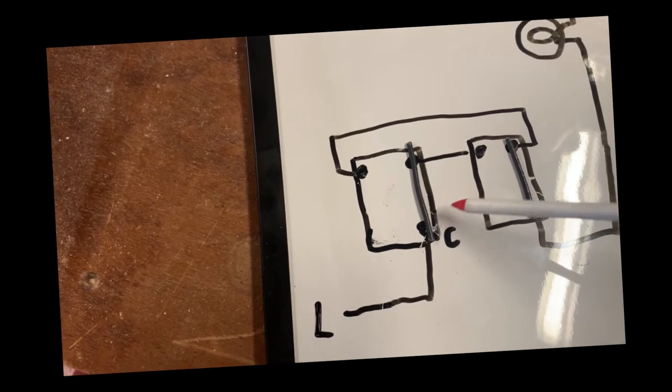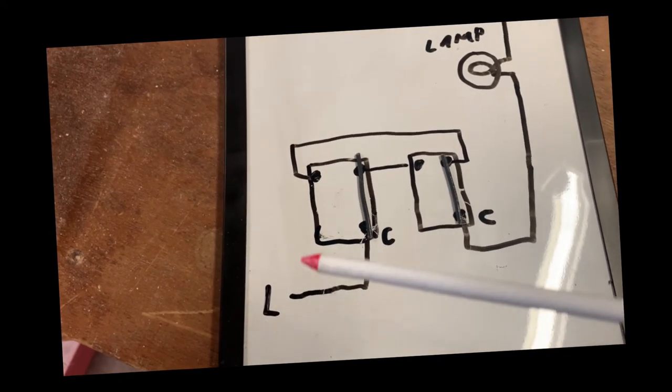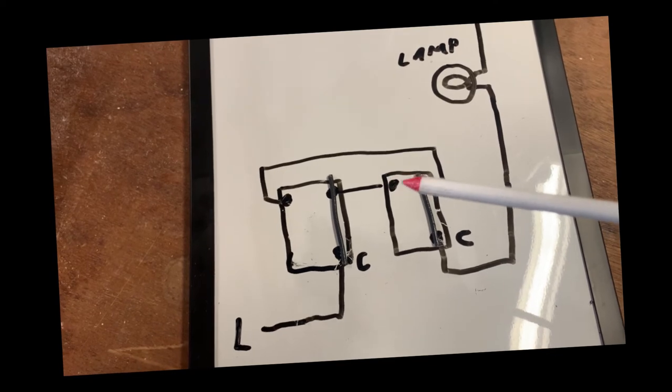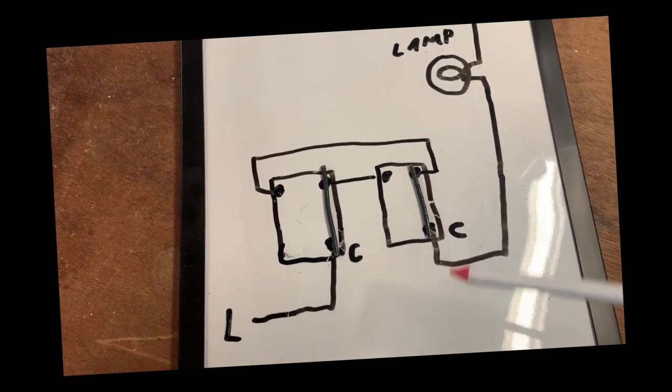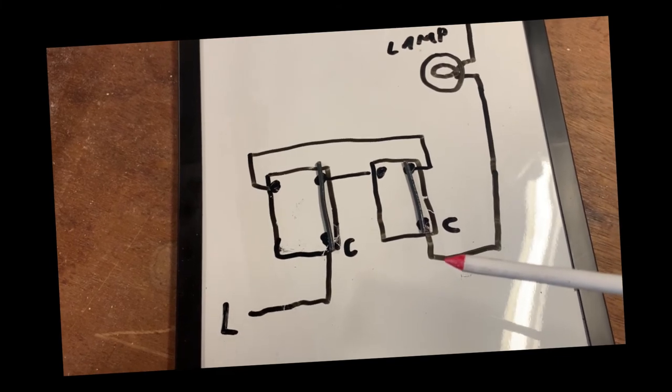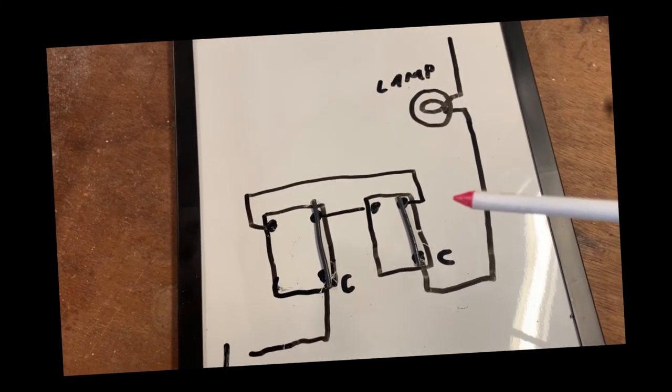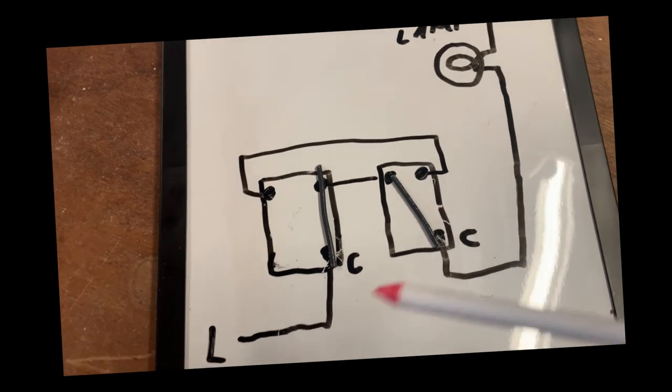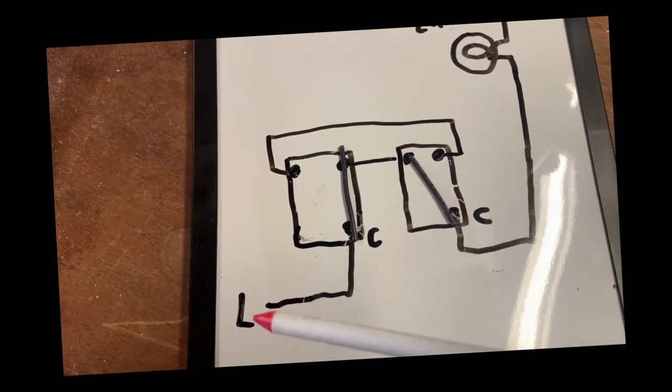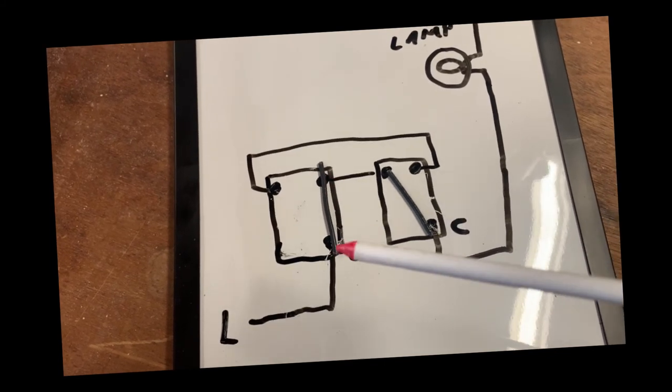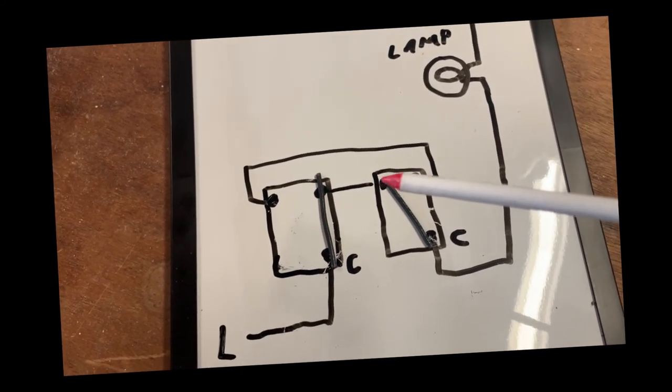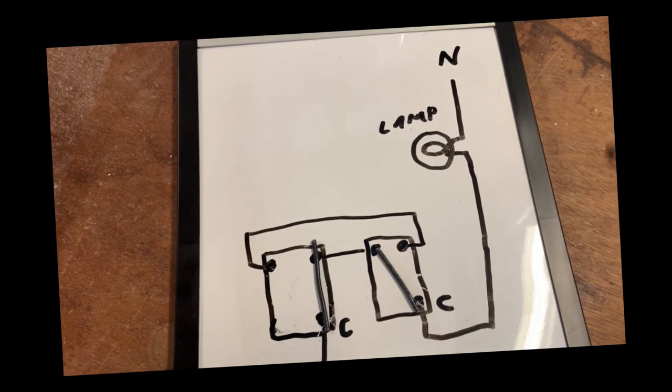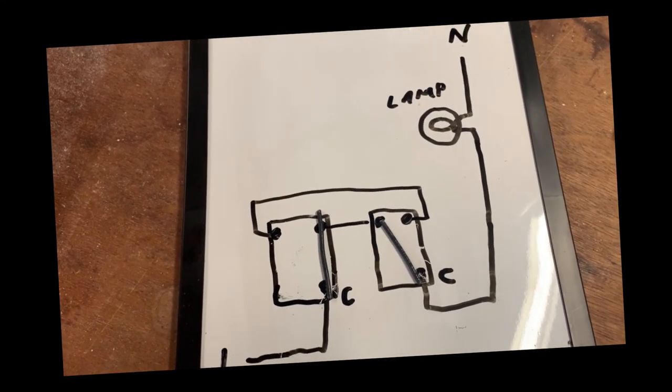I switch the switch and now let's look at the pathway for line. From line through that switch out this side to the second switch, and there's a break, so the light is not on. And then I run down the hallway again and want to turn the light on from that end. I go down there, flip the switch, and now the pathway from line or power into the switch, across those closed terminals, into the second switch down through common—voila, the light is on. That's how a three-way switch works, and that's our lesson for today.